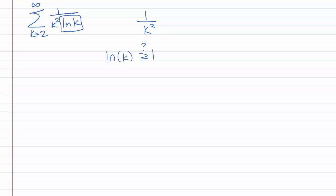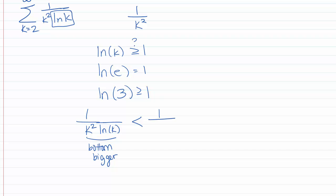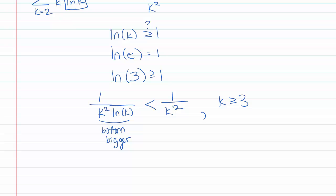ln of k keeps getting bigger. Well, ln of e equals 1 and ln is increasing, so ln of something bigger than e — e is about 2.7 — meaning ln of 3 is greater than or equal to 1. So if I take 1 over k squared and multiply the denominator by a number bigger than 1, like ln of k, I've made the bottom bigger, which means I've made the entire fraction smaller than 1 over k squared. This only works for k greater than or equal to 3, but if the comparison works eventually from some point on, that's good enough.